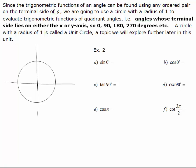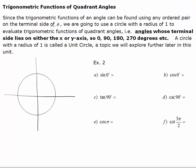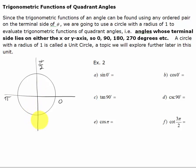These are angles that fall on a quadrant. An example of the first four quadrant angles in one rotation would be: zero, 90 degrees or pi over 2, 180 degrees or pi, and 270 degrees or 3 pi over 2.